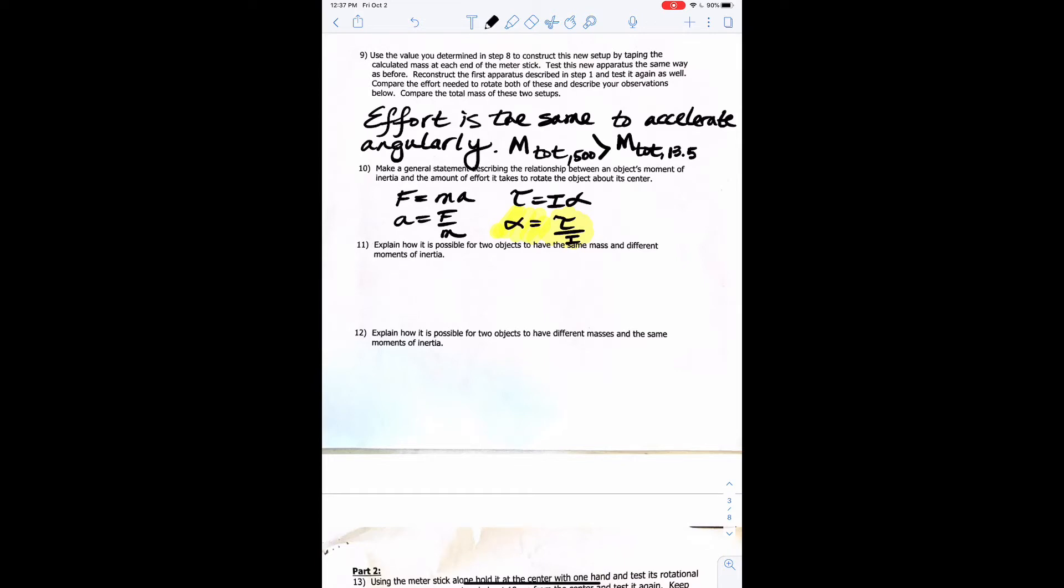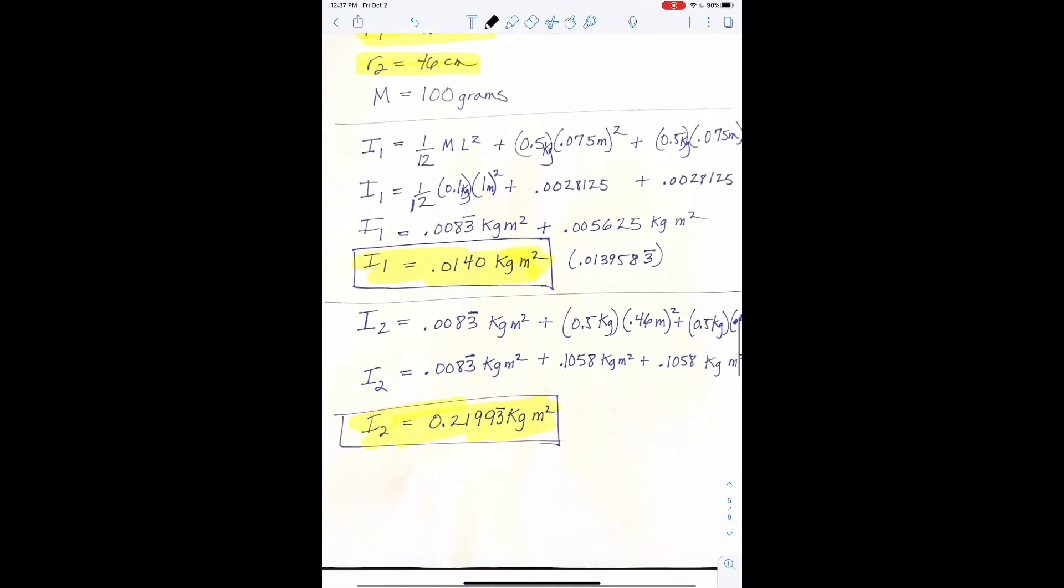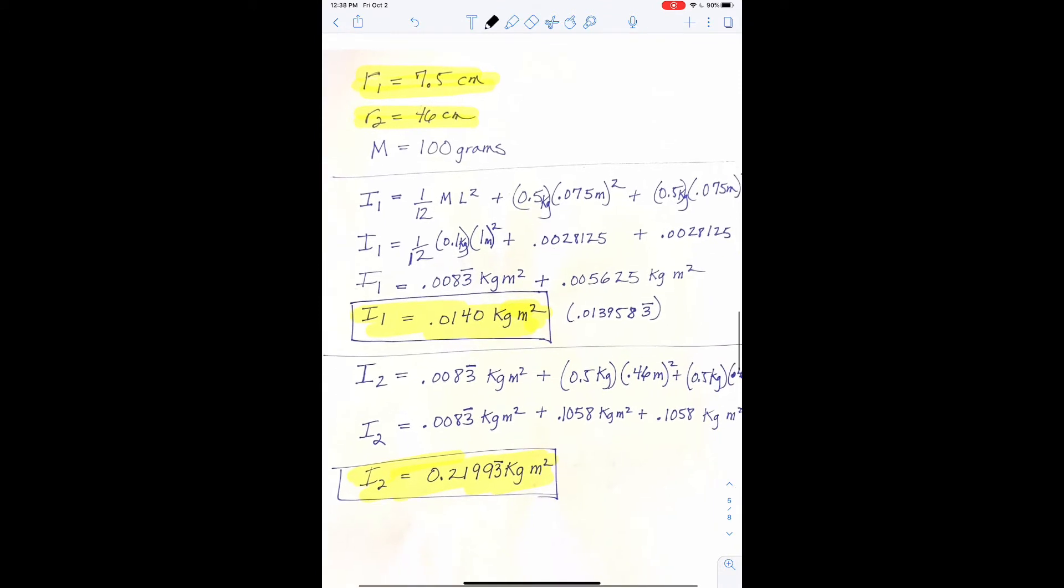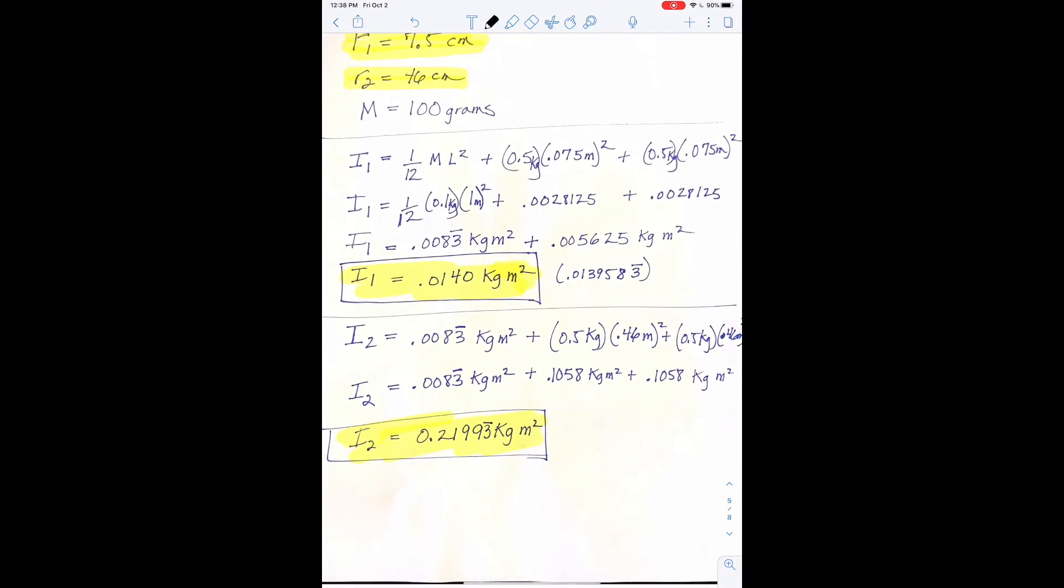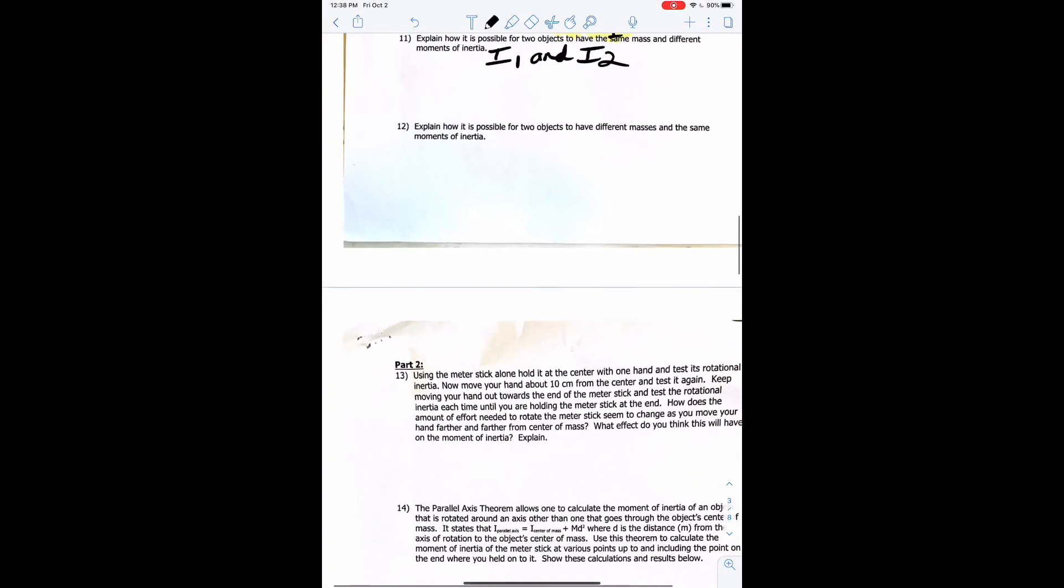So this is just getting at Newton's second law. And I can let you make this statement, but we know F equals MA, A equals F over M for linear motion. And then for angular acceleration, we can say torque equals I alpha. And we can rearrange that and get alpha equals torque over moment of inertia. And so we'll use that relationship to answer this question.